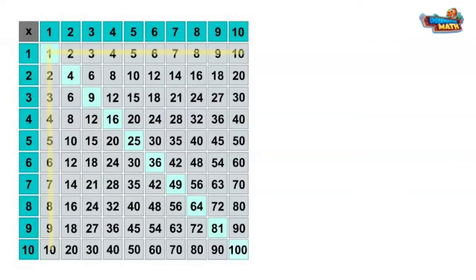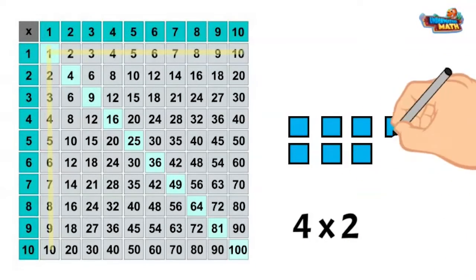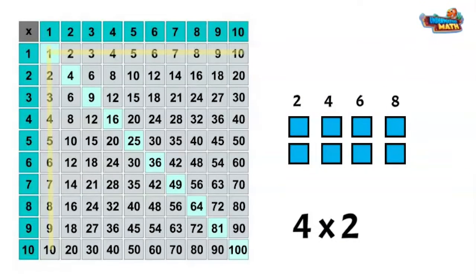The twos facts can be figured out by counting by twos. For example, four times two tells me to count by two four times: two, four, six, eight. Four times two equals eight. Another row and column we can highlight because we have a strategy to find the answer.